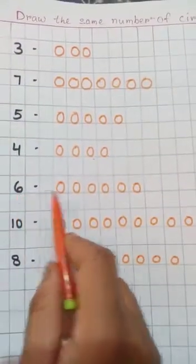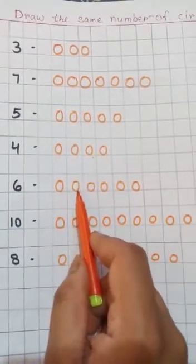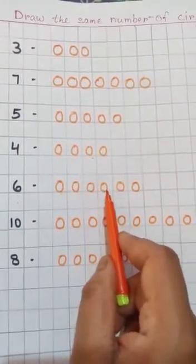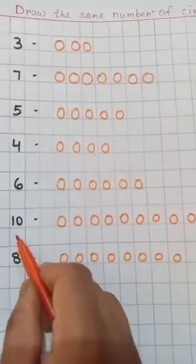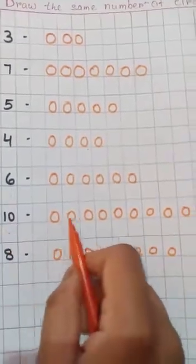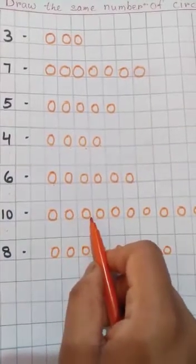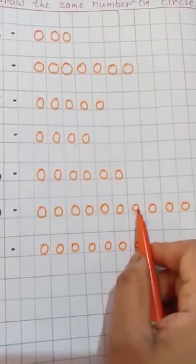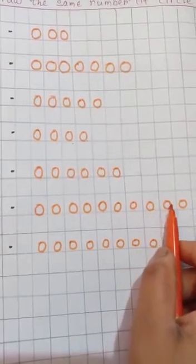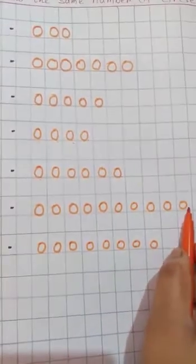Then, 6. 1, 2, 3, 4, 5, 6, 7, 8, 9, 10. 10 circles.